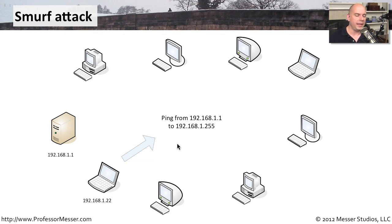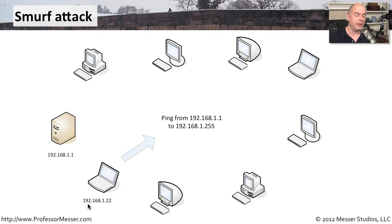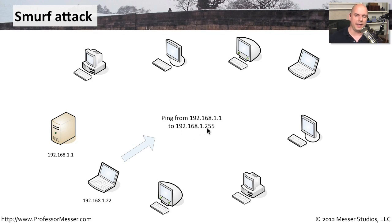The Smurf attack used the ping command with a little bit of packet crafting. Let's say you're on the network at 192.168.1.22, and you craft a ping request. You're going to spoof this request and send it out to everybody, but instead of sending it from your IP address 192.168.1.22, you pretend you're sending it from 192.168.1.1. And you're not sending it to a particular workstation — you're sending it to 192.168.1.255, the broadcast address.